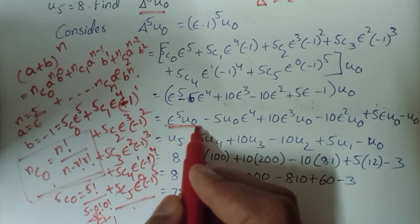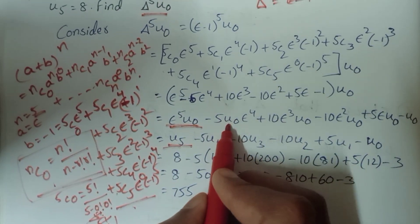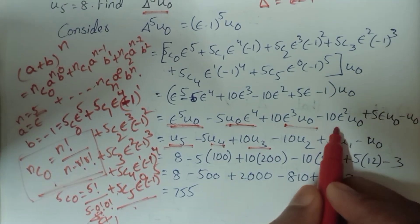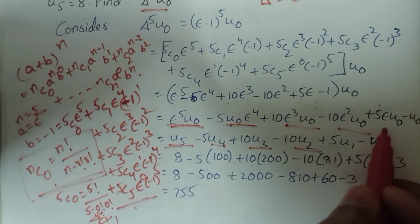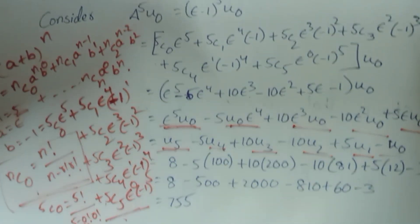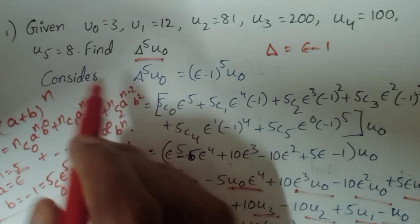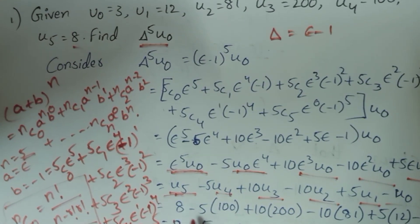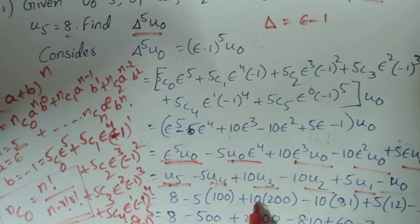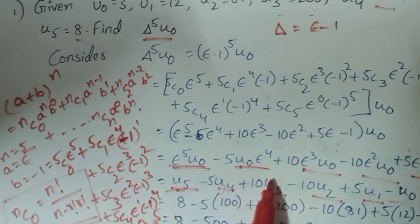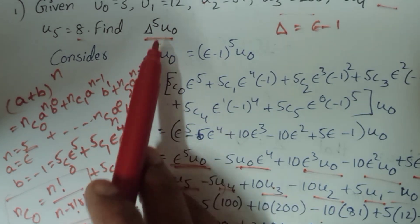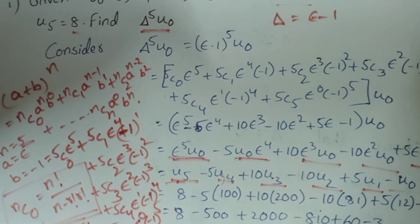Here e power 5 u0 gives u5, e power 4 u0 gives u4, e power 3 u0 gives u3, e squared u0 gives u2, e·u0 gives u1, and u0 remains u0. Substituting the given values: u5 is 8, minus 5 times u4 which is 100, plus 10 times u3 which is 200, minus 10 times u2 which is 81, plus 5 times u1 which is 12, minus u0 which is 3.